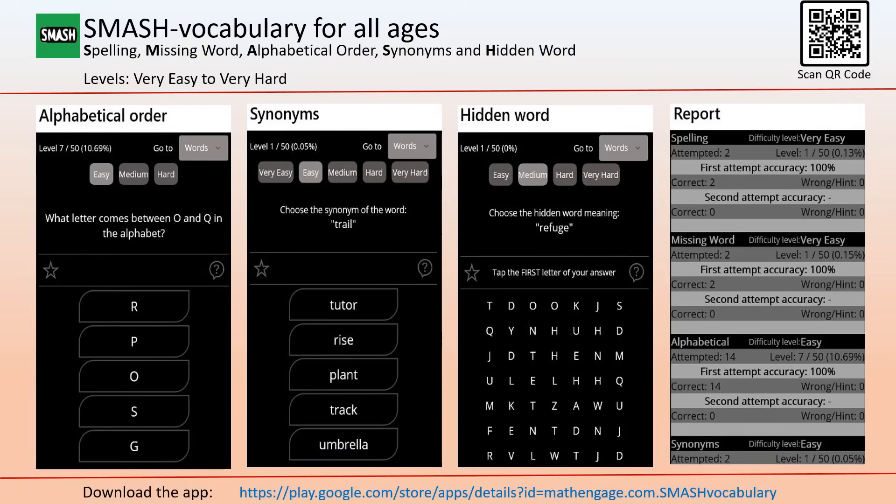Synonyms expand your vocabulary by exploring words with similar meanings. Hidden word puzzles enhance your pattern recognition skills. Additional features include My Activity, a log of your daily practice and progress over time, and Revise, which lets you revisit previous words and exercises to improve memory and retention. For best results, focus on 10 words at a time, then revise immediately.